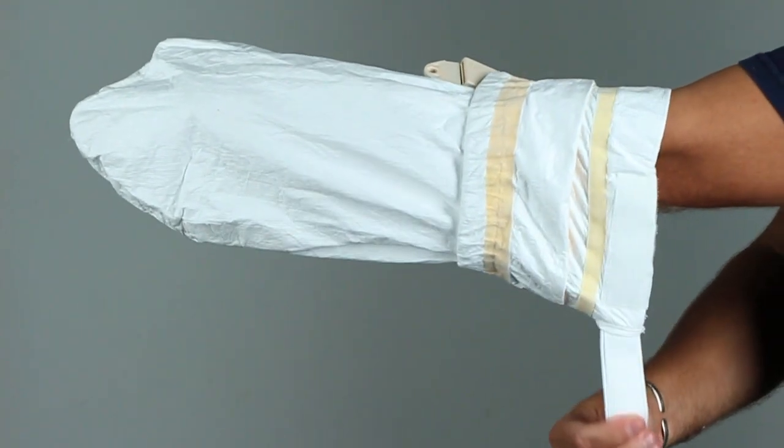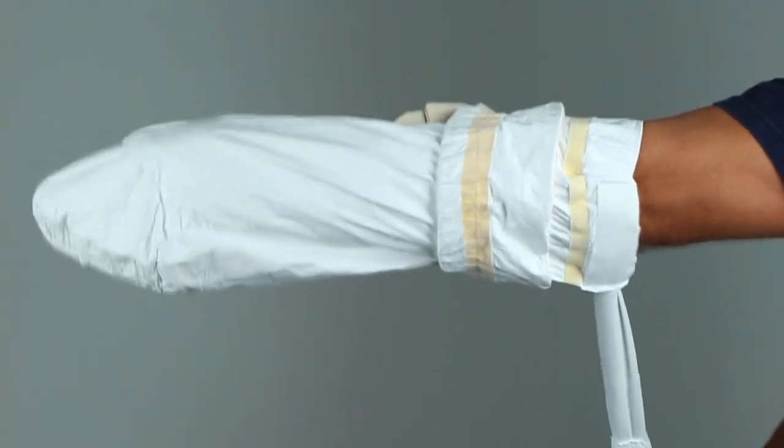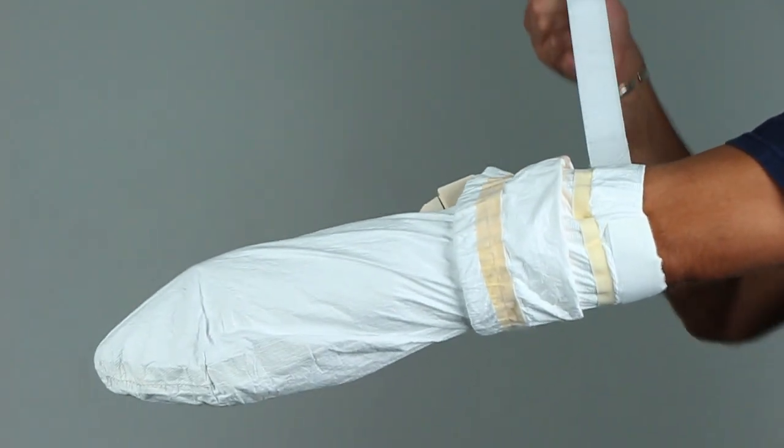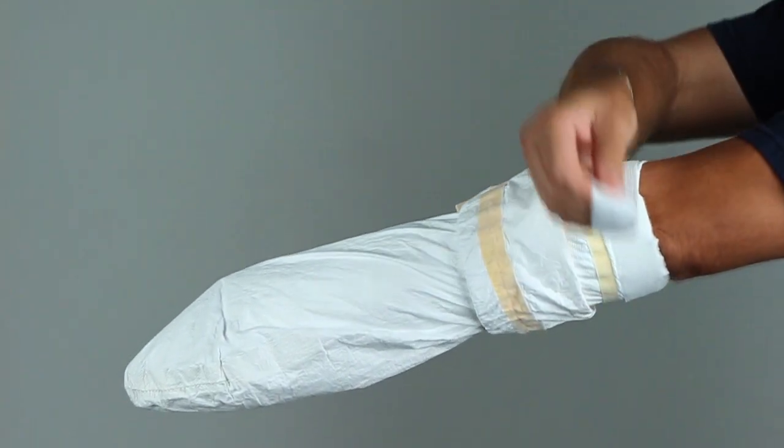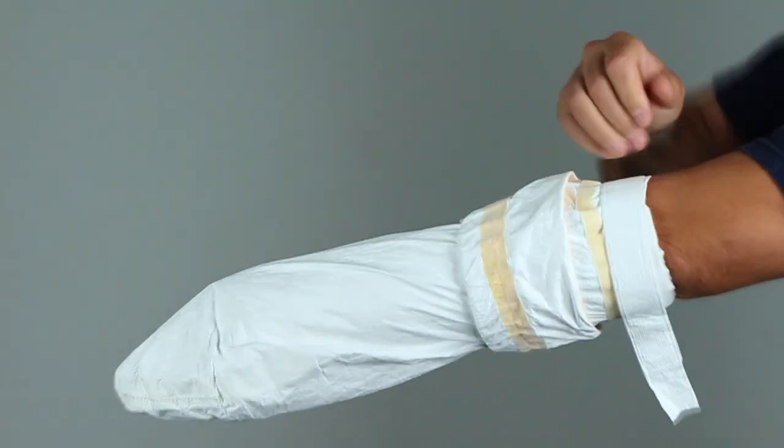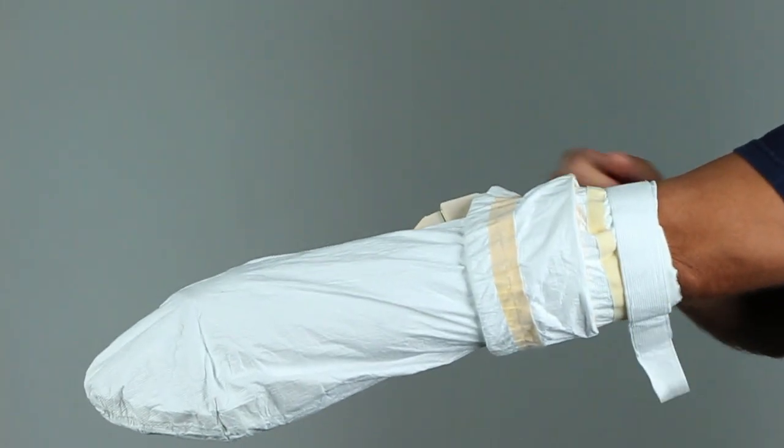Grasping the loose end of the white Velcro strap, wrap it around the cast cover and affix it to the other end. It should be tight enough to fit snugly against your skin right above your cast or bandage, but not tight enough to cause any pain or discomfort.